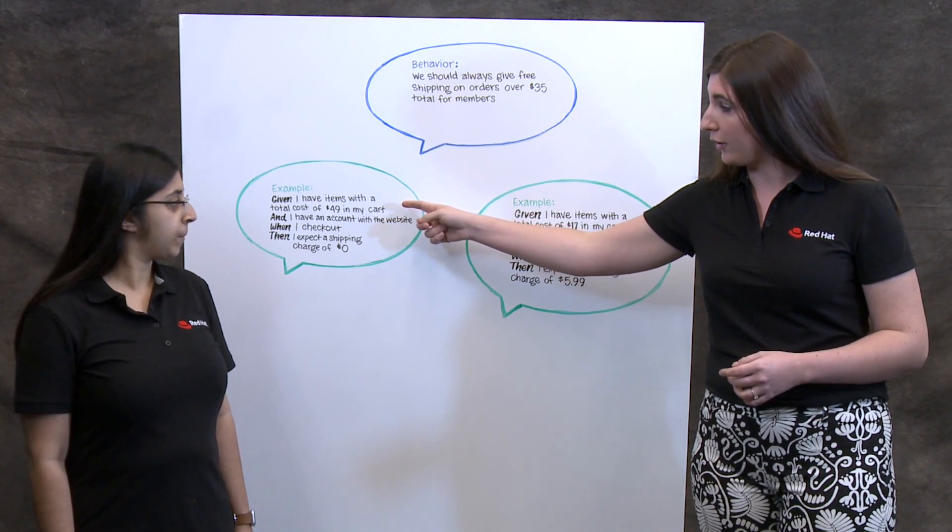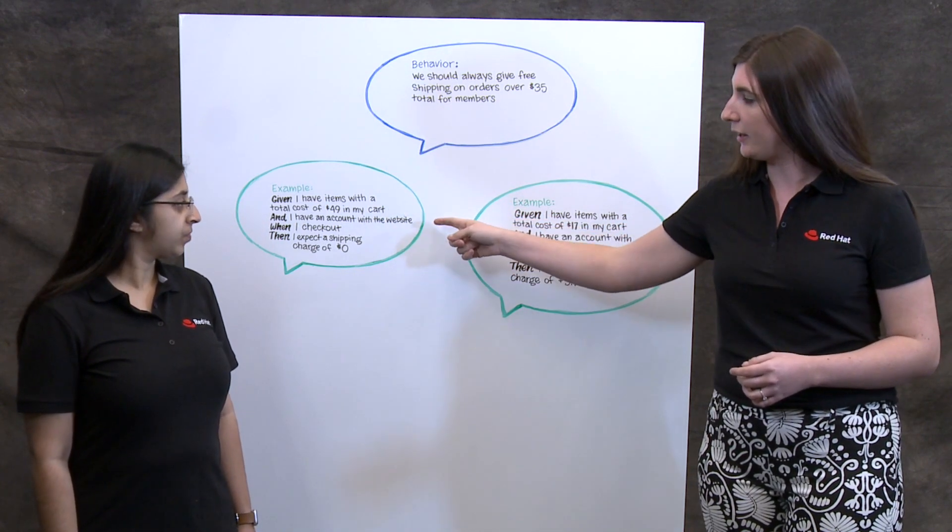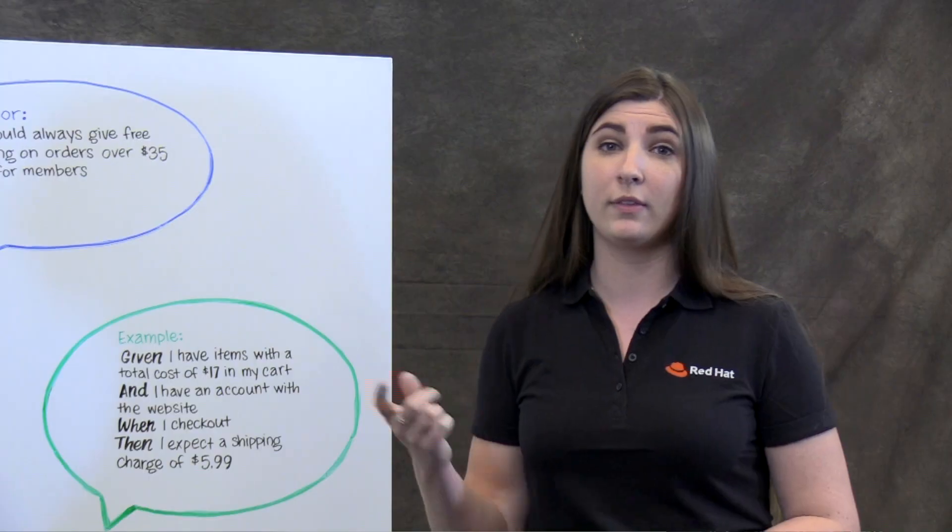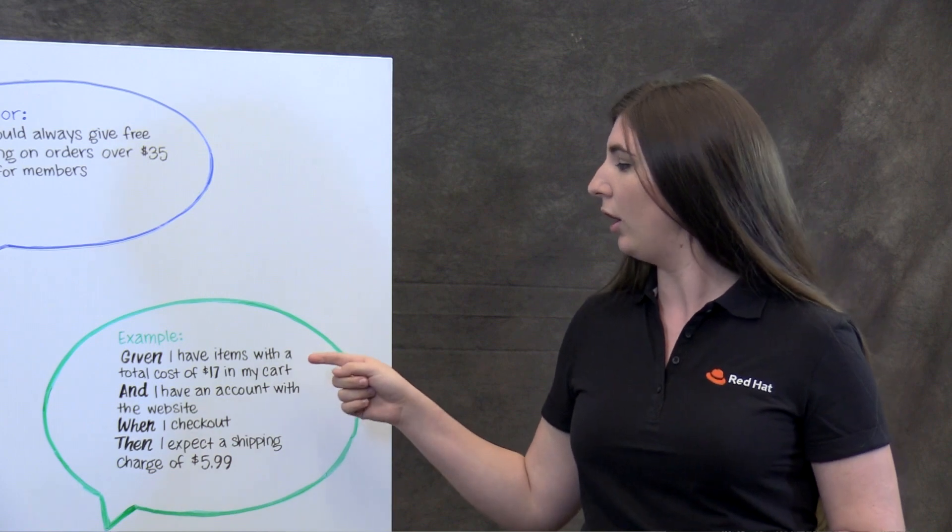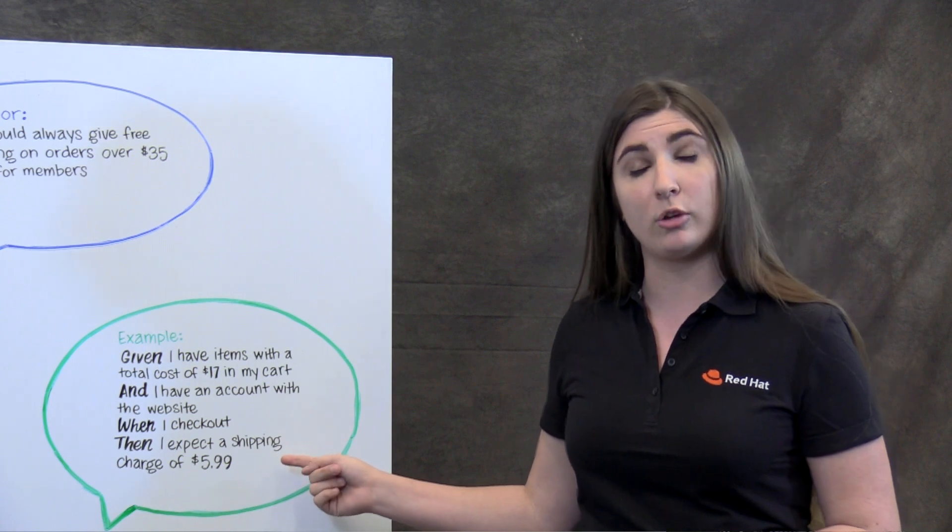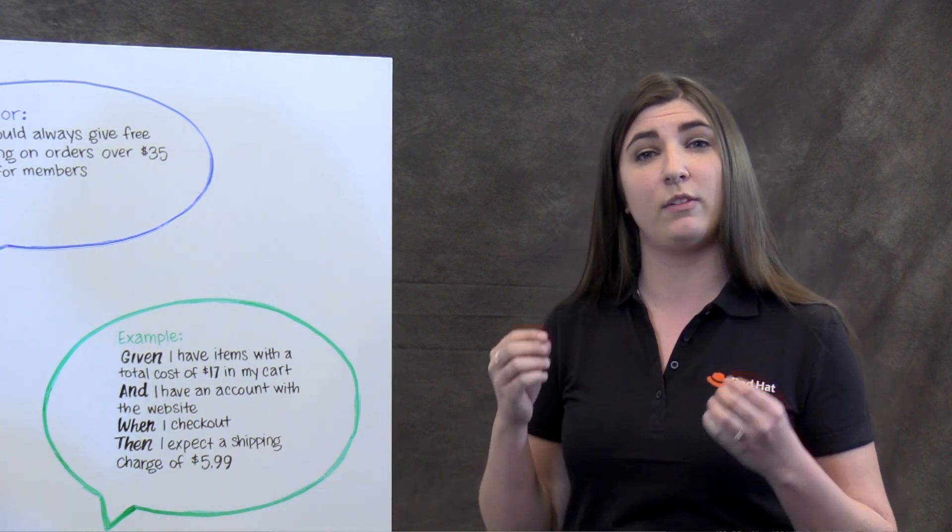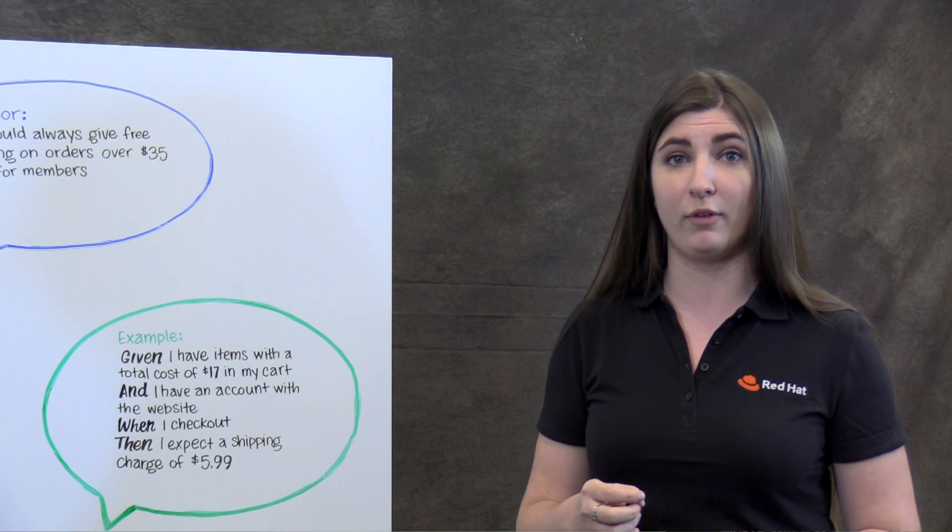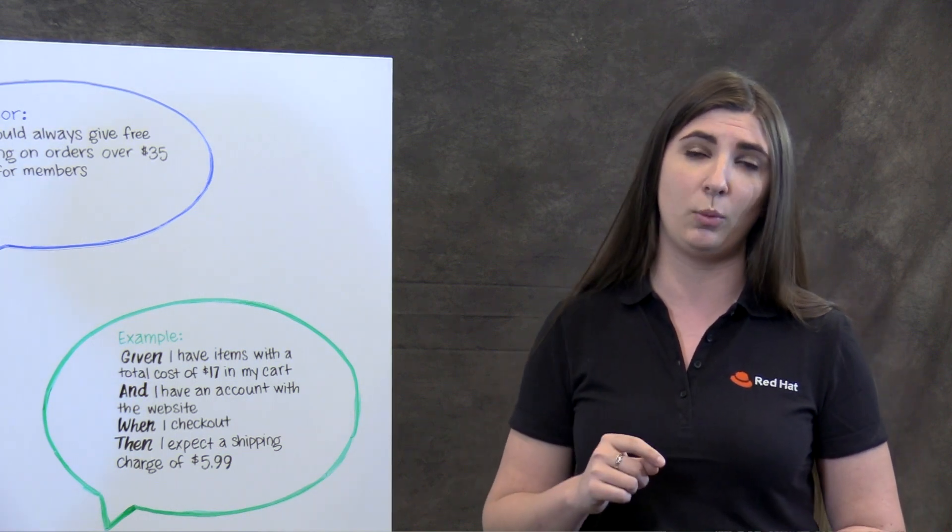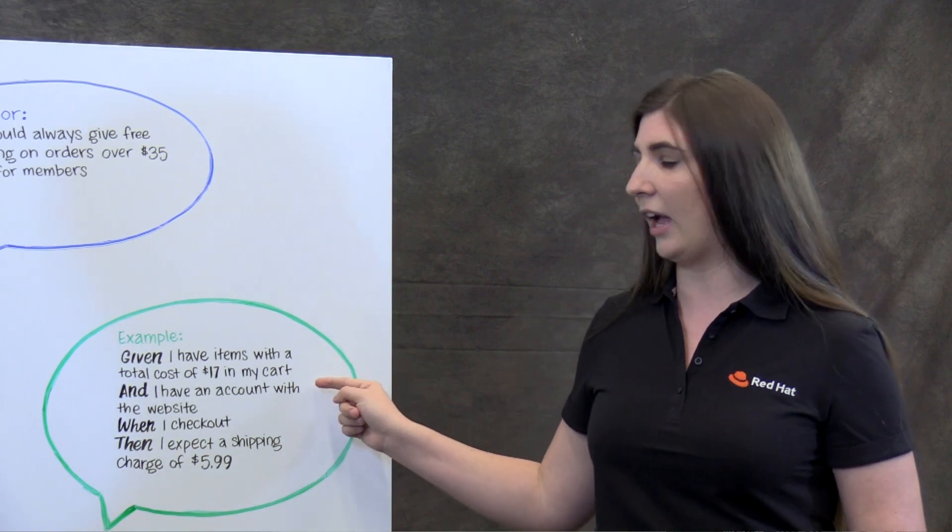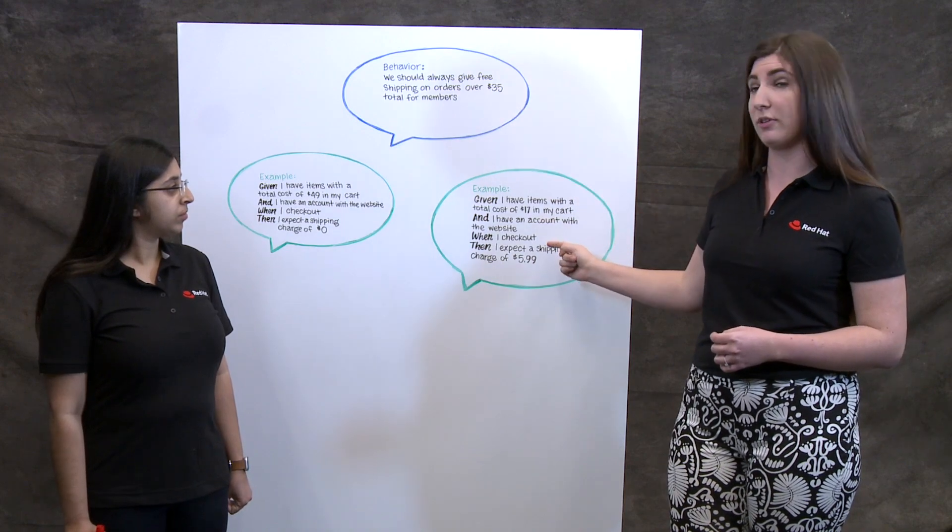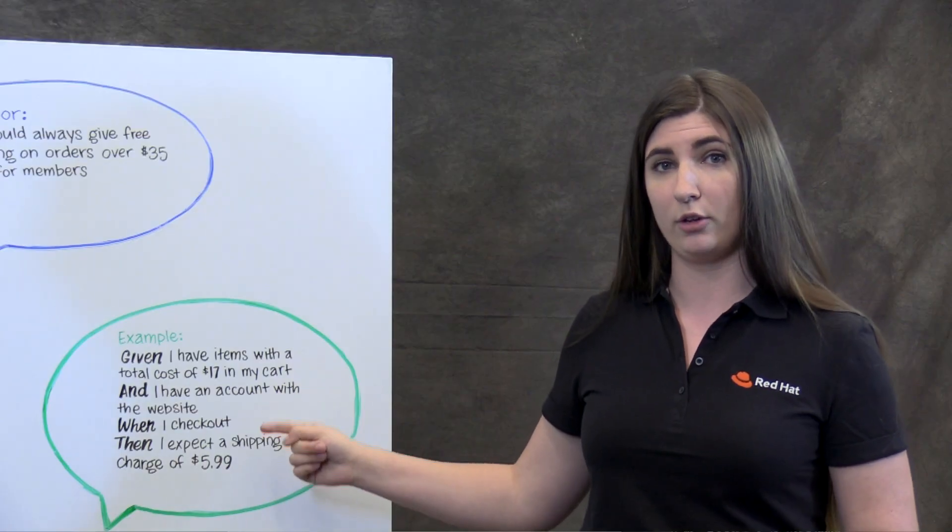Given I have items with a total cost of $49 in my cart, and I have an account with the website, when I checked out, I expect a shipping charge of $0. The second example: given I have items in the cart of $17, and I have an account with the website, when I check out, then I expect a shipping charge of $5.99. We're being very specific about what's in the cart, what the outcome of having that amount in the cart is for the shipping cost. And we're also defining one thing that was missed in our behavior, and that is having the account on the website. The team must have missed that when they wrote the behavior, but now that they're writing a specific example, they've got that in there. So it's already helping.